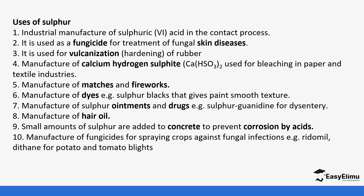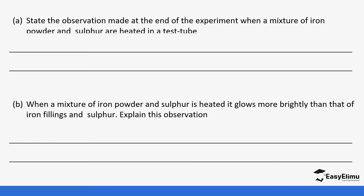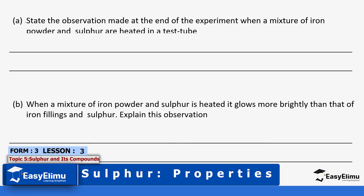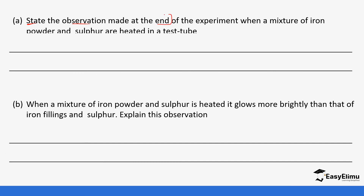Let's look at a practice question: what observation is made at the end of the experiment when a mixture of iron powder and sulfur are heated? Note — they are asking about the end, not the beginning. At the end of the experiment, we see a black solid — iron sulfide — is formed. At the beginning during the reaction, it glows and produces a lot of heat, and then the black solid is formed.